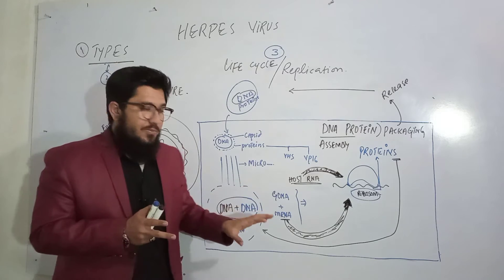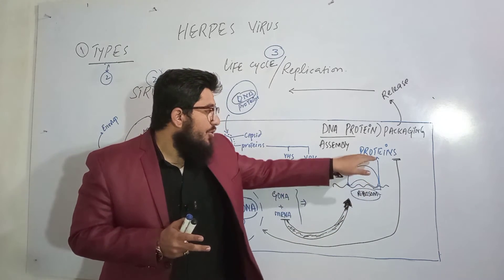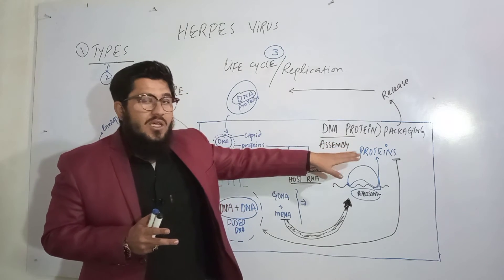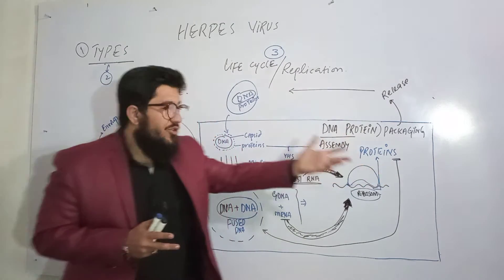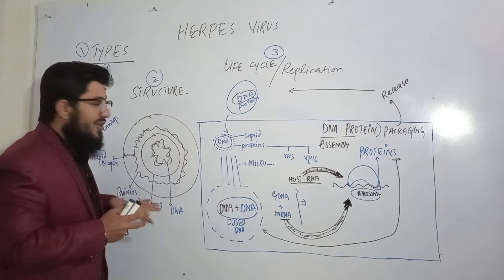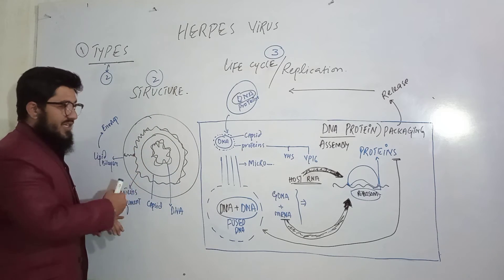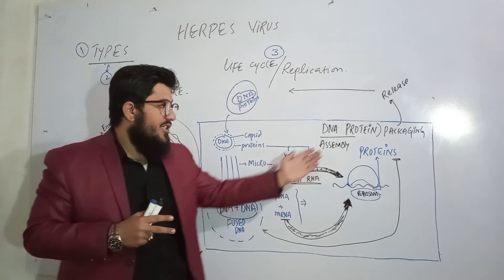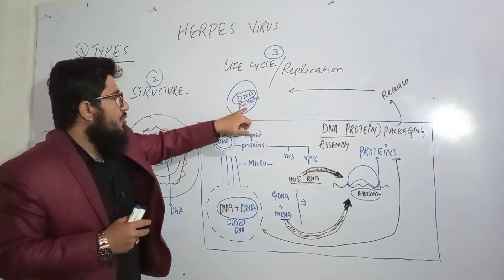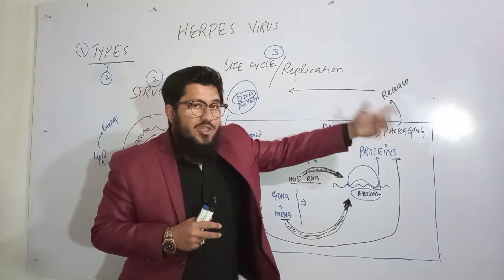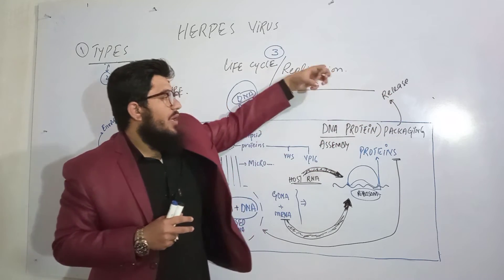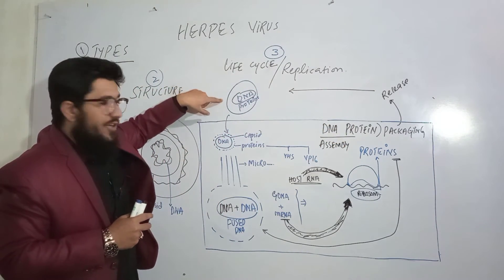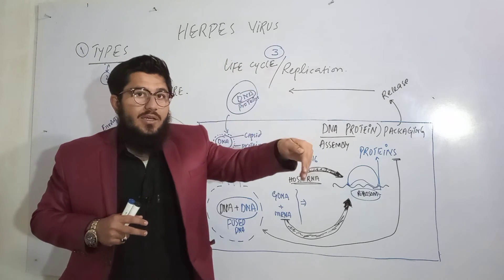Messenger RNA will come towards the ribosomes, translate, and proteins will be synthesized. The genomic DNA is also coming. These proteins are all those needed for the entire virus — capsid proteins, tegument proteins, and other proteins. All the proteins will be synthesized. Then the genomic DNA and capsid proteins will assemble, packaging will be done, and at the end they will be released with an envelope taken from the host cell. The virus is then free to find and infect another cell.